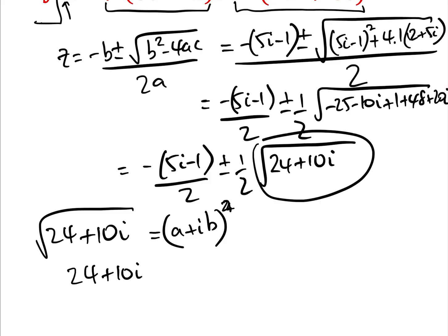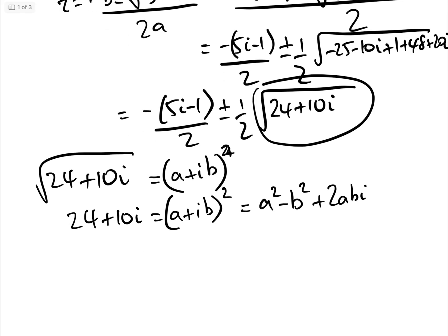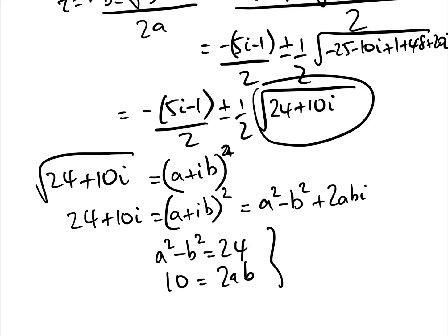So if 24 add 10I equals (a add IB) squared, that equals, just expanding, a squared minus b squared add 2ABI. All we need to do now is compare the coefficients. So we have a squared minus b squared equals 24 — comparing real coefficients — and 10 equals 2AB, comparing coefficients of I. We could solve this by simultaneous equations or, in fact, by inspection, because clearly a is 5 and b is 1. It's always worth looking to see if you can solve by inspection first rather than creating a quadratic in A and solving that way.